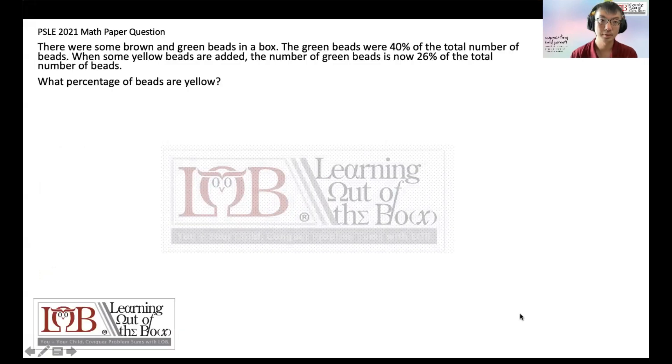In this question, we are going to talk about there were some brown and green beads in a box. The green beads were 40% of the total number of beads. Let me follow the process of KCNSU: keyword, concept, numbers, statements and units. This is our LOB five-step technique that can help guide children to solve any questions.